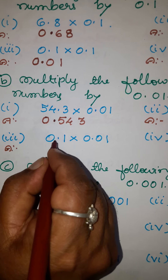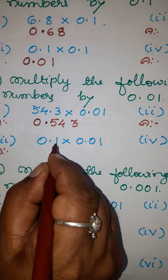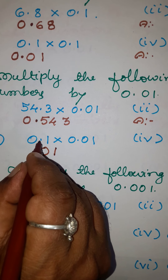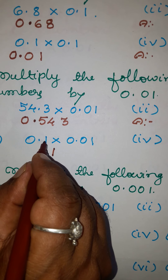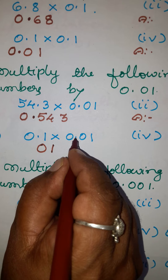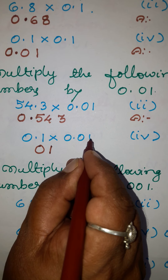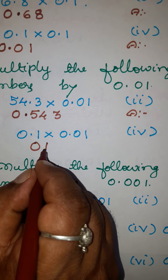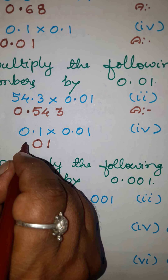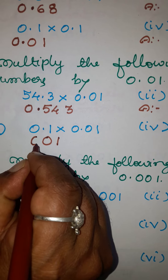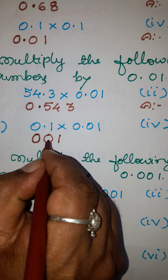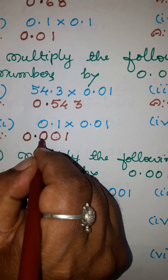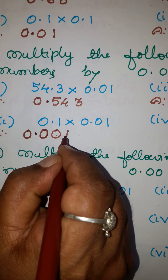Third example: write this number ignoring the decimal point as 01. After the decimal to the right there is one place. Here in this number to the right there are two places. Two plus one is three. But here there are only two digits, so create one more place by inserting one zero. Now you can move three places — one, two, three — put the decimal point, and place a zero here. The answer is 0.001.